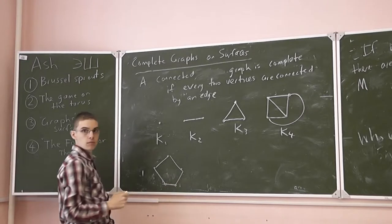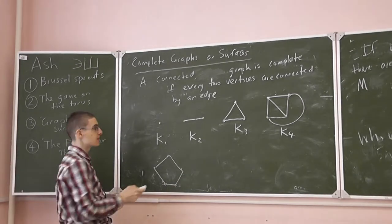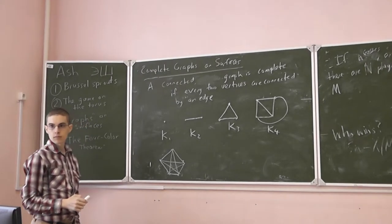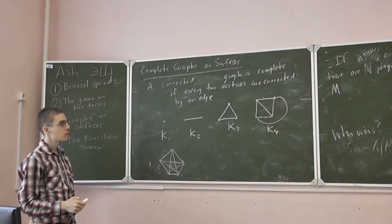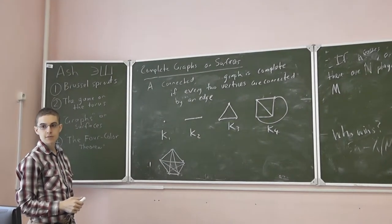Why a complete graph on five vertices is not planar? It's a very important point. Why? To say that you need to add a point. Why K4 is not planar? It's a very important point.